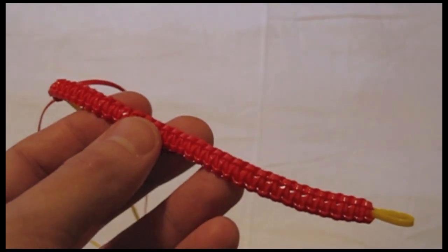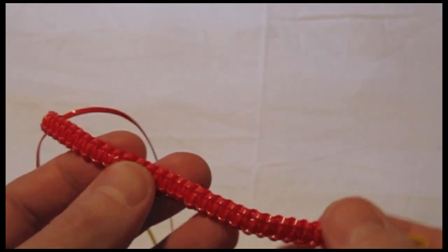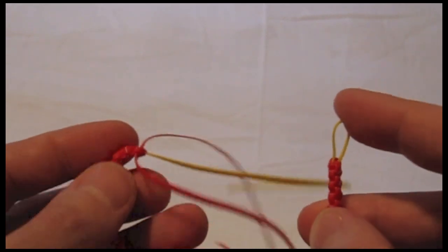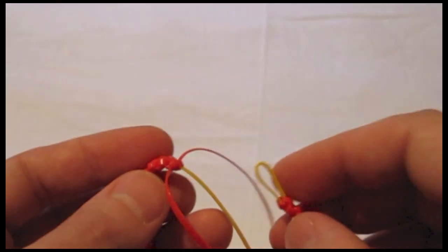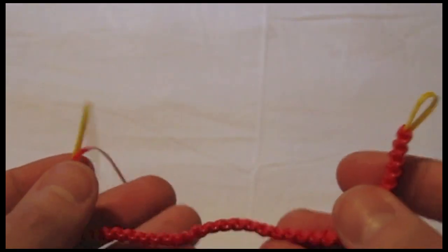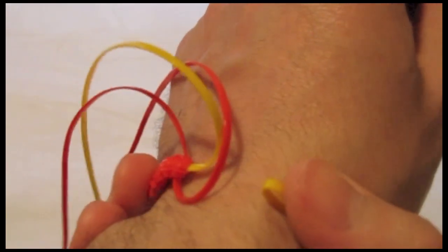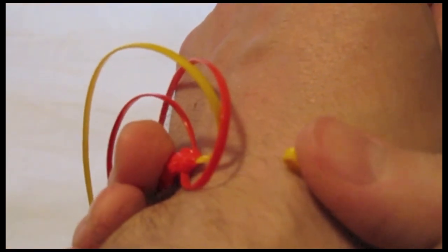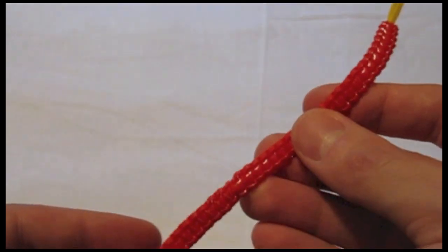Once you have enough stitches so that when you wrap the lanyard around your wrist, the loop is about an inch away from your last stitch, you are ready for the next step. You can see here that my last stitch is about an inch away from the loop at the top of the lanyard, so I am ready for the next step.